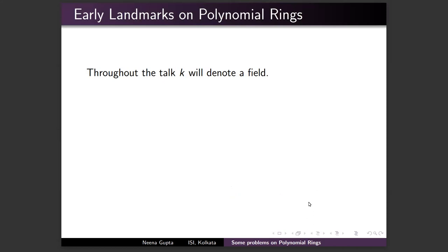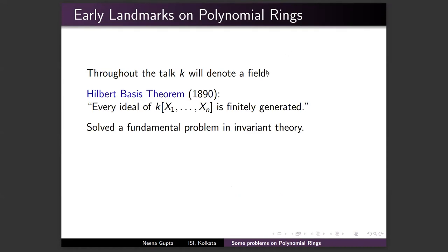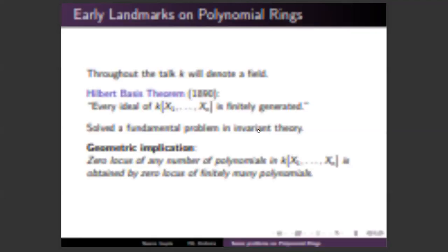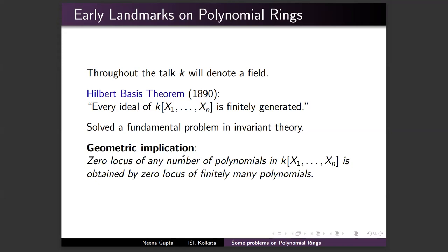Throughout this talk, small k will always denote a field — a space where we can add, subtract, and multiply any two elements. The first early breakthrough was Hilbert's Basis Theorem, which says every ideal of a polynomial ring is finitely generated. Geometrically, this means the zero locus of any number of polynomials can be obtained by the intersection of only finitely many polynomials.